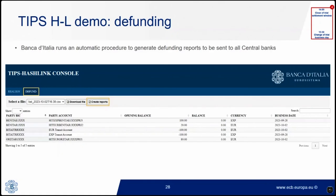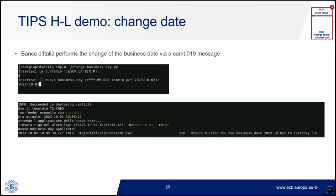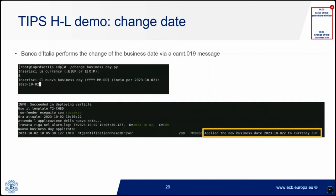The last end-of-day procedure is defunding. The operator runs an automatic procedure to generate a defunding report sent to all central banks. These reports contain the breakdown of funds to be transferred from the central bank's escrow accounts to the RTGS accounts of participants in T2. Once all end-of-day procedures are completed, the operator performs a final step — the change of business date — by sending a CAMT.019 message to the TIP/HashLink platform. The business date has now ended.